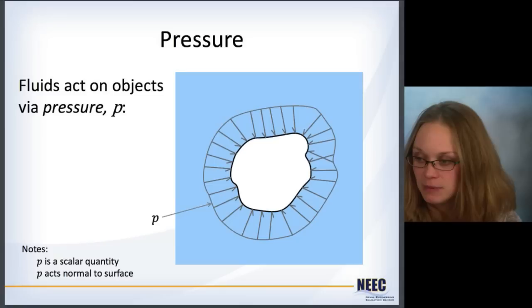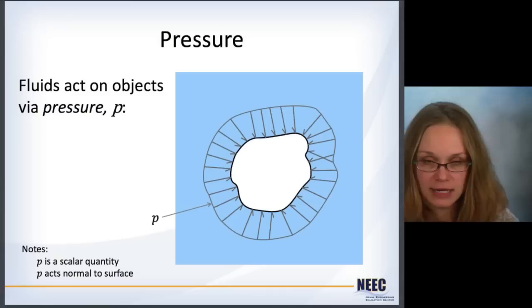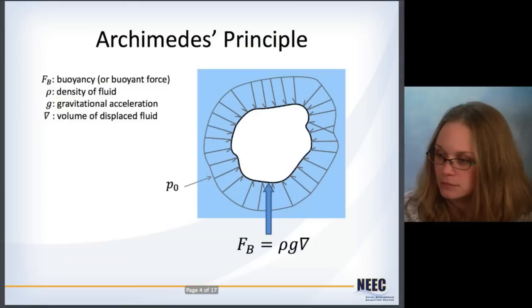Now a fluid acts on an object via the pressure P. So just a general body here can be anything, pressure acts all around it. Remember that pressure is a scalar quantity. It's just a number, right? It doesn't have any direction to it yet. It's not until it encounters an object and it acts normal to its surface that you actually get a direction and a resulting force from that.